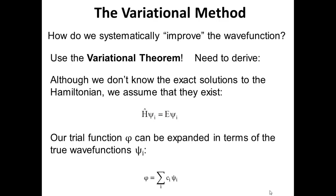To think about something concrete: say that we're attempting to solve the Schrodinger equation for the helium atom. We would use as the set of functions added together to represent our trial function the 1s orbital for helium, the 2s orbital, the 2p orbital, and so on — just to put a concrete idea behind representing a function as a sum of other functions.